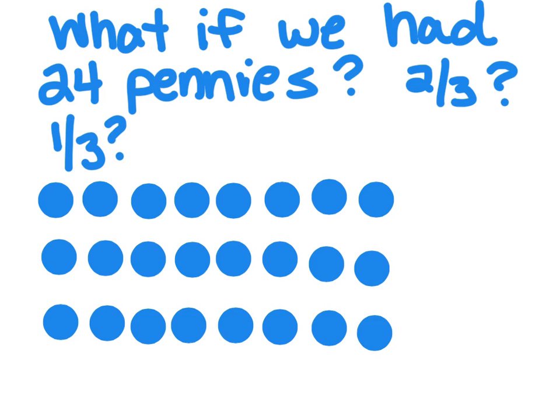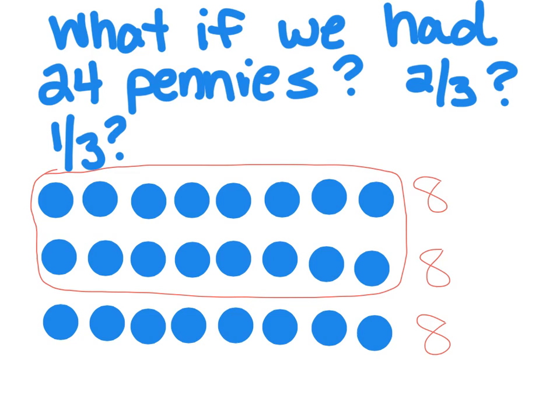And how many do I have in each group? Okay, I have eight in each group. So there's eight in this row, eight in this row, and eight in this row. So if I were trying to find two-thirds of 24 pennies, it would be two groups of eight or 16 cents.